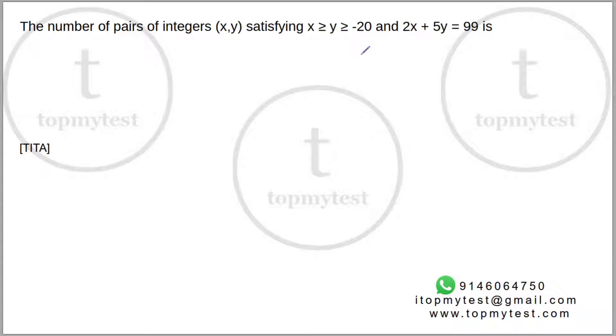Okay, pretty straightforward question. Let's see what this says. The number of integers x and y, satisfying x greater than or equal to y, which in turn should be greater than or equal to minus 20. And 2x plus 5y equals 99 is how much?